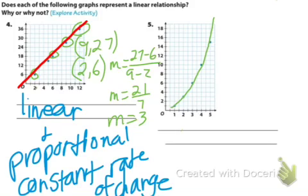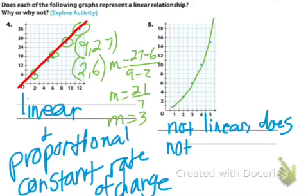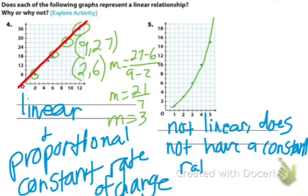That does not look like a straight line. We really don't even need to do any work for that. It is not linear, and since it is not linear, it does not have a constant rate of change.